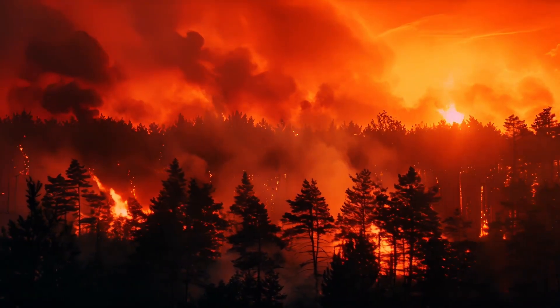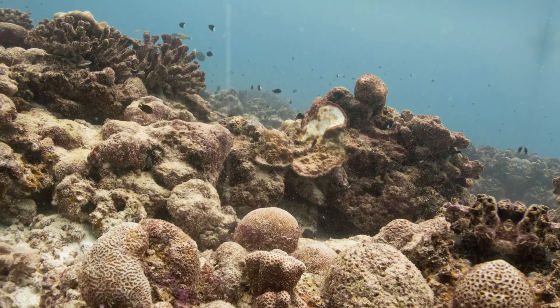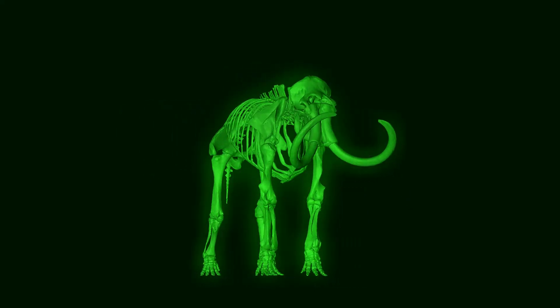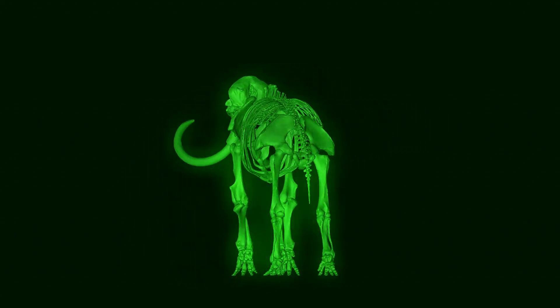Forests destroyed, coral reefs vanished, entire food chains broke apart. For large animals and complex ecosystems, these were global catastrophes.